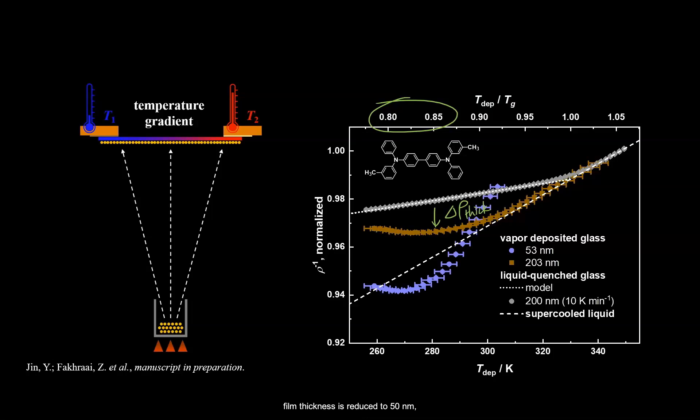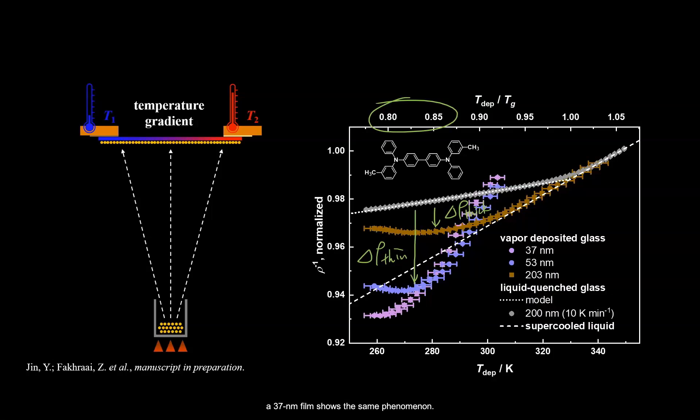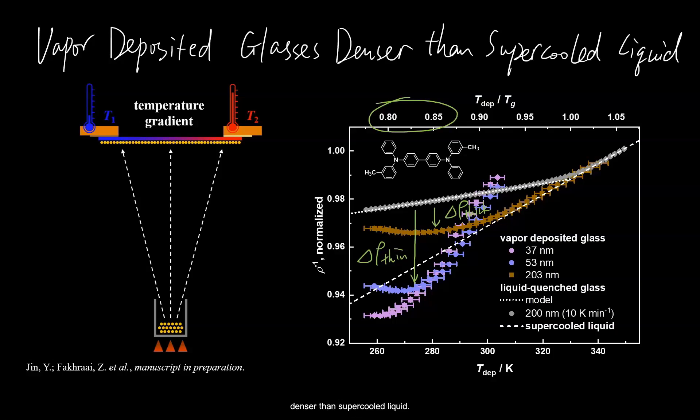However, as film thickness is reduced to 50 nanometers, some of the glasses are also becoming denser than supercooled liquid. We soon realized that this was no artifact after seeing that a 37 nanometer film shows the same phenomenon. And in fact, for the sake of clarity I have omitted the thickness between 37 and 53 nanometers, but all these films do have a certain deposition temperature range where the vapor-deposited glasses are denser than supercooled liquid.